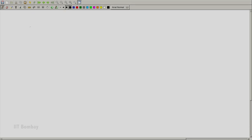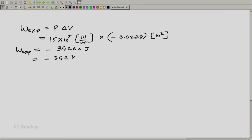Let us now understand the expansion work, w expansion work which is p into delta v. Pressure is 15 into 10 to the power 5 Newton per meter square into delta v is minus 0.0228 meter cube. From here what I get, w expansion is equal to minus 34200 joules which is minus 34.2 kilojoules.